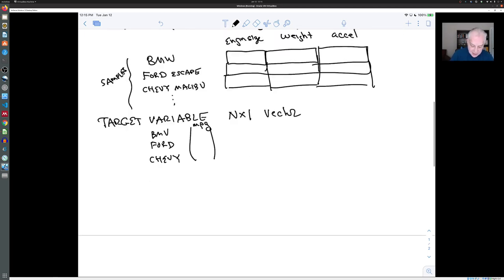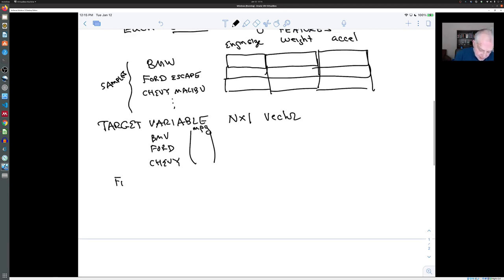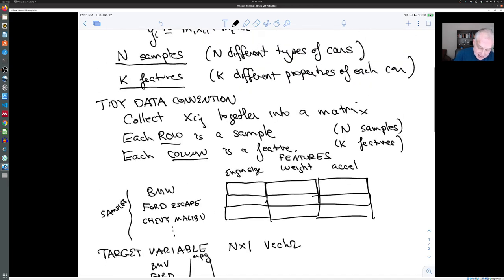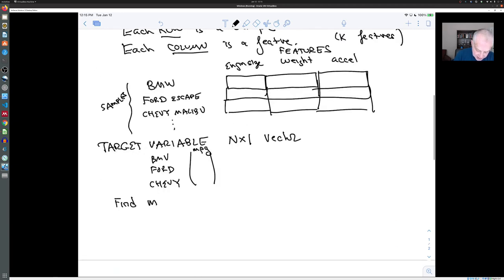The problem that we're given therefore is to try to find these mj's for j equals 1 up to k, so that yi is approximately the sum of xij mj as j goes from 1 to k plus b.